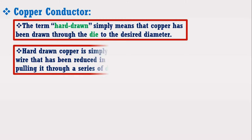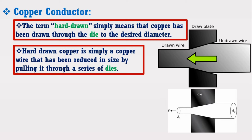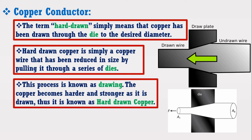In other words, hard drawn copper is simply a copper wire that has been reduced in size by pulling it through a series of dies. Different dies can be used to reduce the size of the material to a desired diameter and shape. This whole process is known as drawing. The copper becomes harder and stronger as it is drawn, thus it is known as hard drawn copper. The copper conductor is passed through the hard drawn process in order to increase its tensile strength, which is an important requirement for a conductor material used in overhead transmission lines.